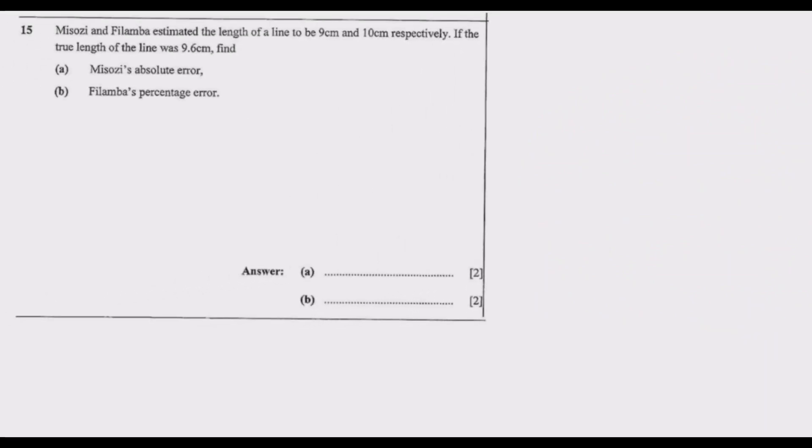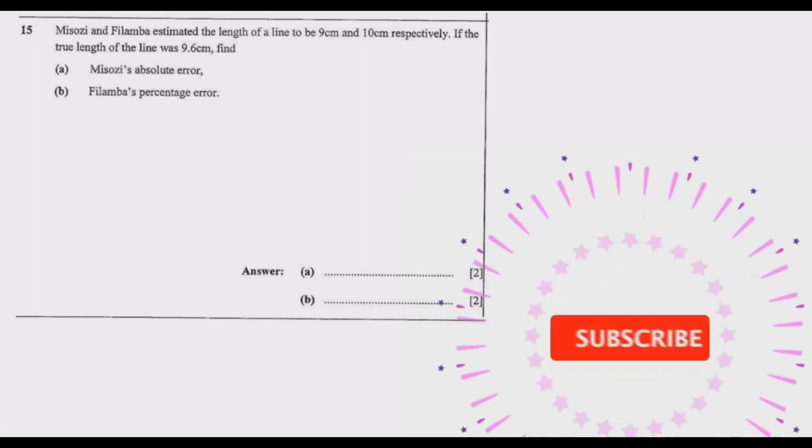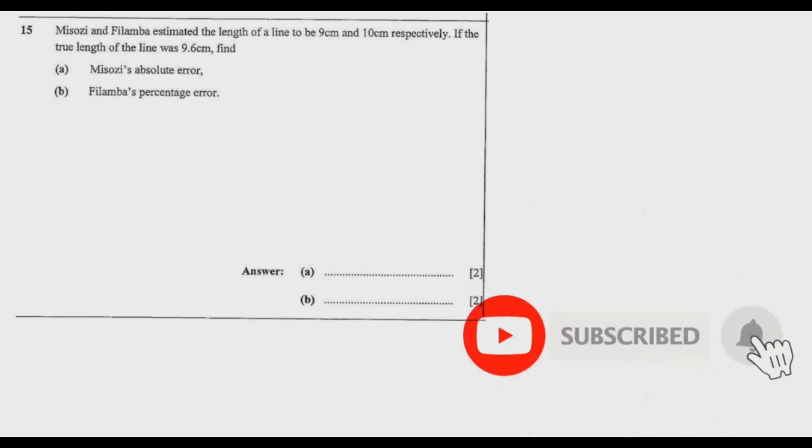Welcome dear viewers, today we are looking at question 15 from the 2017 G12 mathematics paper 1. The question states that Misozi and Filamba estimated the length of a line to be 9 centimeters and 10 centimeters respectively. If the true length of the line was 9.6 centimeters, find Misozi's absolute error.